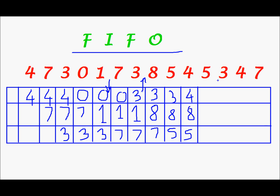Next, I need page 5. In these frames, 5 already exists, so this is a hit. I don't need to make any changes to these frames — 4, 8, and 5 remain. Next, I need 3. To bring 3 in, I have to remove 8, because 8 was the first to be brought in. So the frames become 4, 3, and 5.